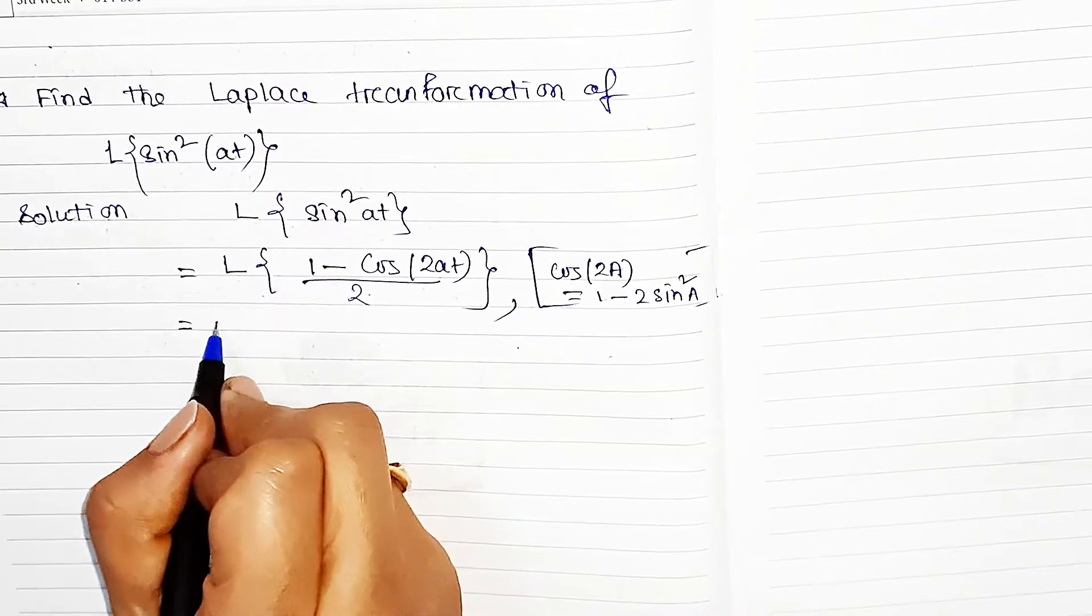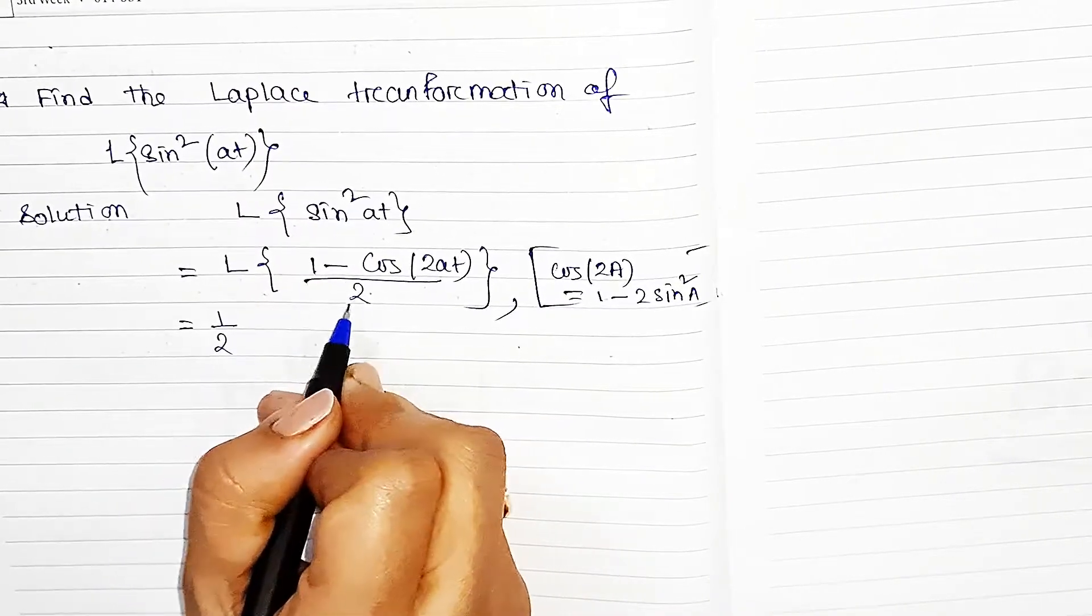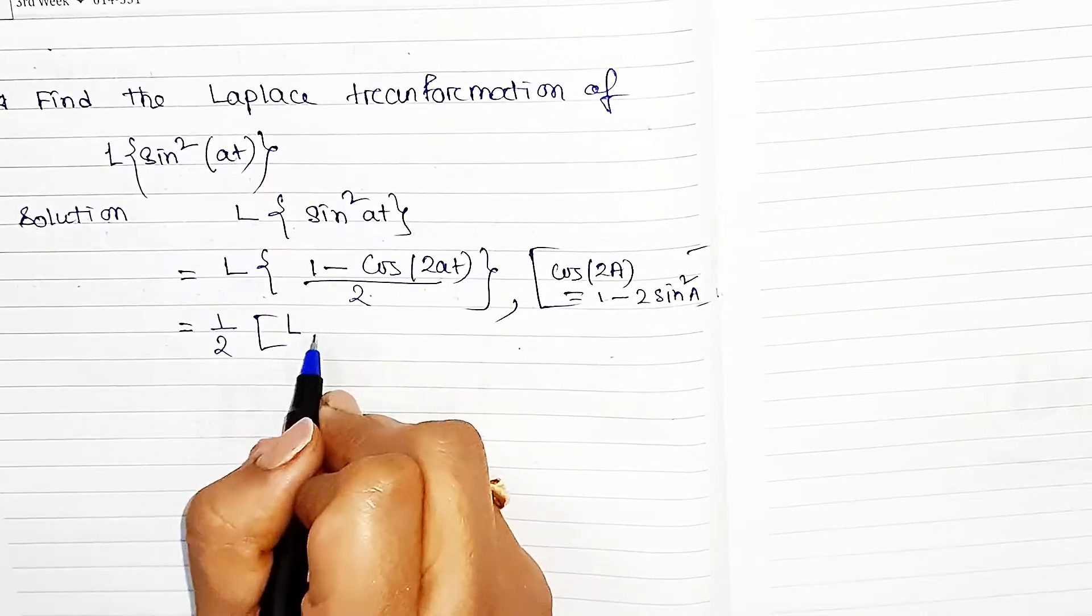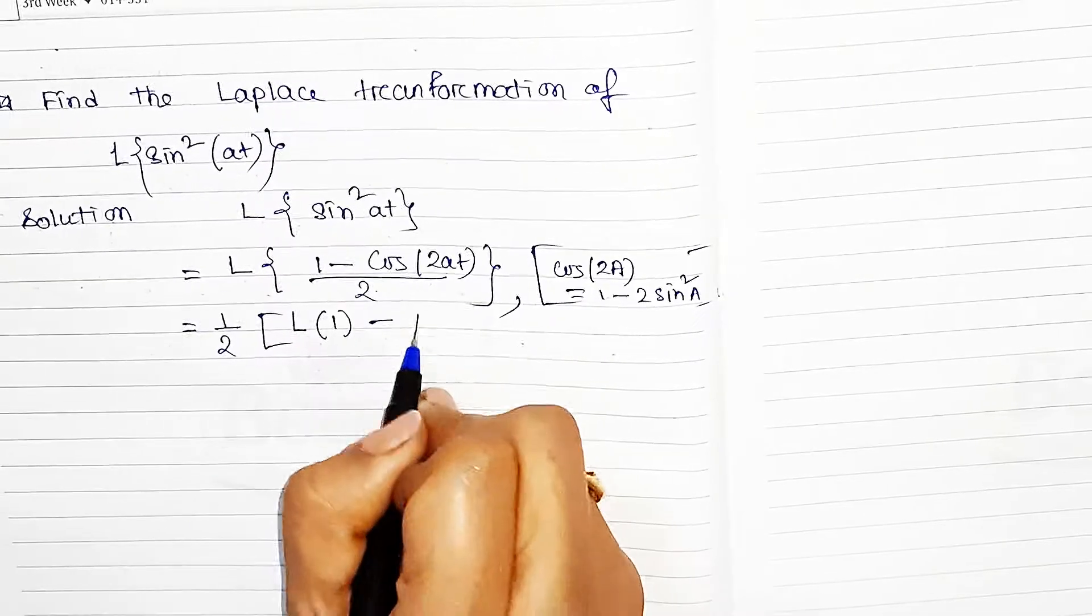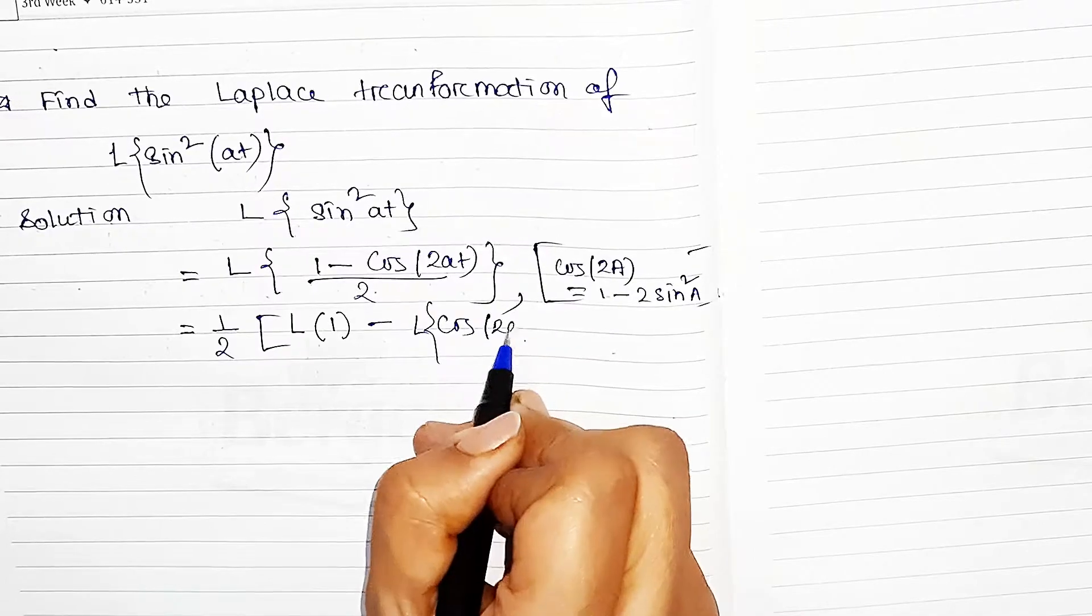In the next line we can take common factor. So L of 1 minus L of cos(2at).